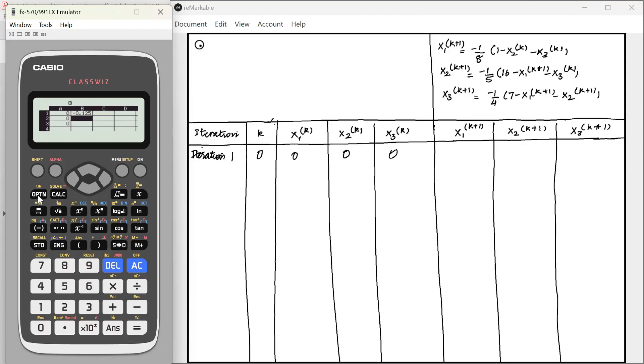Similarly we write the formula for x2 here, fill formula. Minus 1 by 5 times 16 minus A1 minus A3. And here we write the formula for x3, minus 1 by 4 times 7 minus A1 minus A2.